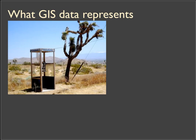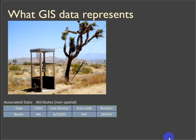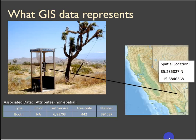If we think about this lone old-fashioned phone booth out in the middle of the desert, we can collect information about this place — non-spatial information. What is it? It's a booth. What color is it? Last service, area code, what phone number or identifying number it is, anything we want, what road is it on, who used it last. There's all sorts of information we could collect about this phone booth. We can also understand where it is and assign it spatial coordinates. Both of these things — the attributes associated with the location — that's GIS data.